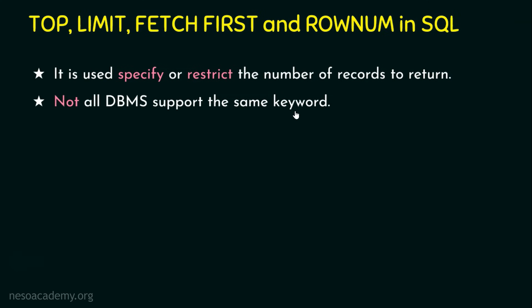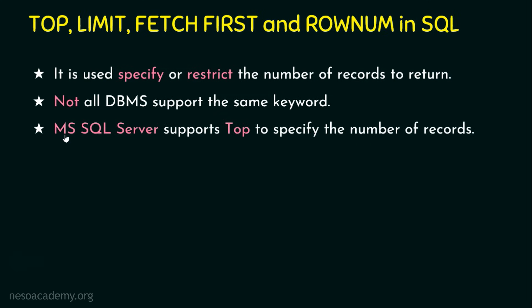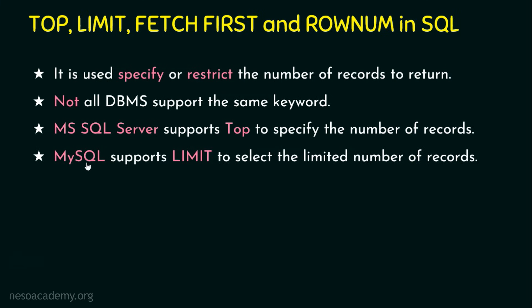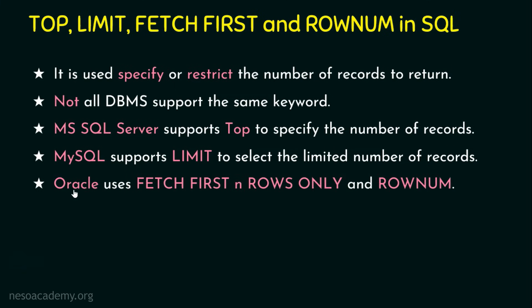For example, Microsoft SQL Server supports the TOP keyword to specify the number of records to be returned. MySQL supports the LIMIT keyword to select a limited number of records. Oracle uses FETCH FIRST n ROWS ONLY and ROW NUMBER keywords to achieve the same task. So before using these keywords, you need a strong understanding of which vendor supports which keyword.